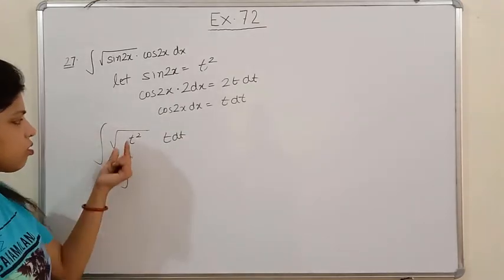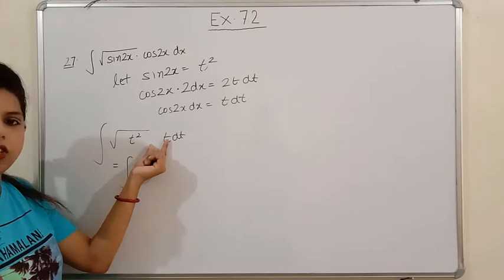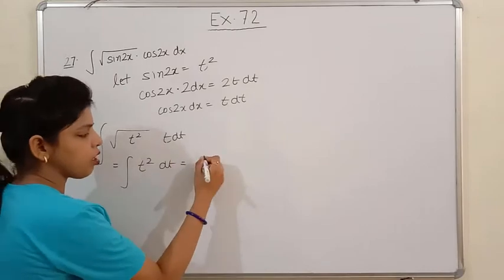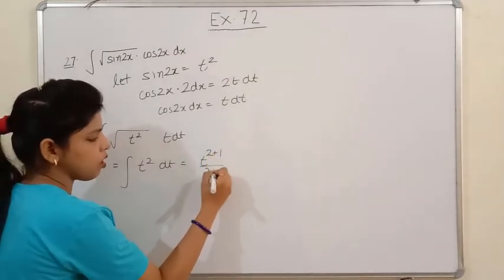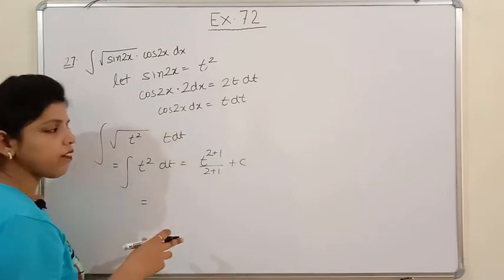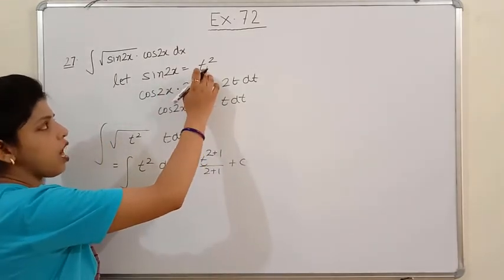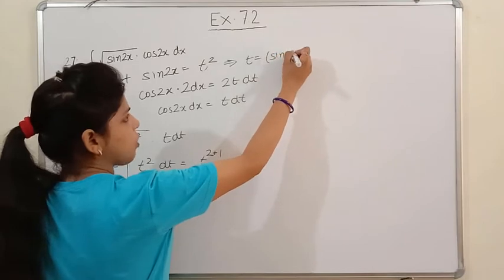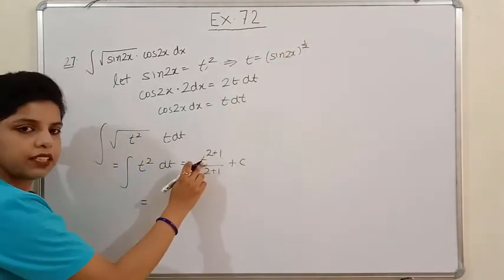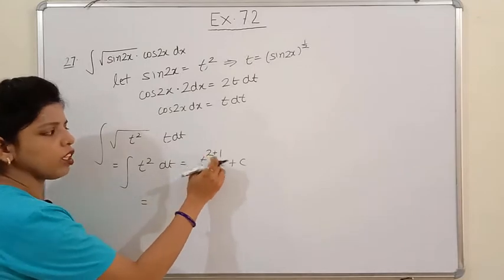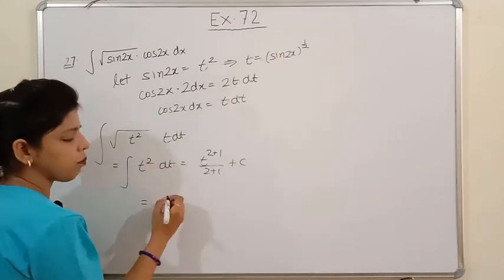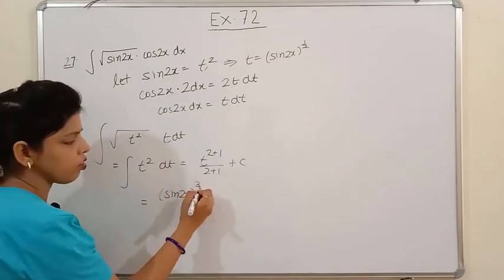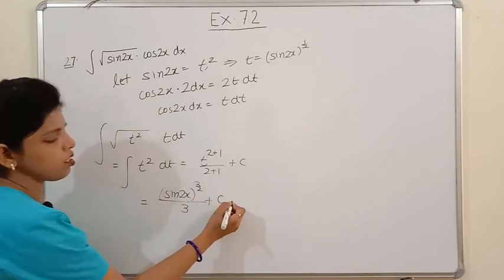So t·t dt = t² dt, which is a simple power rule integration: t^(2+1)/(2+1) + c = t³/3 + c. Finally put the value of t: t = √(sin2x), so t³ = sin2x^(3/2). The answer is sin2x^(3/2) / (3/2) + c, which simplifies to (2/3)sin2x^(3/2) + c. Please note down.